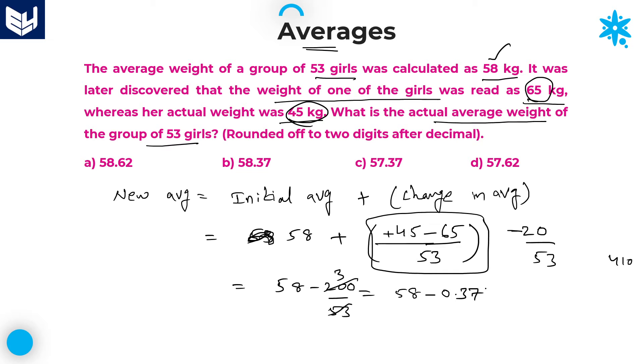I will take it as 58 minus 0.37. If I subtract 0.37 from 58, what I will get? 57.63. In the options it will be 57.62, which is option D. Option D is the right answer for this question. Approximately 57.62 will give you the correct answer.